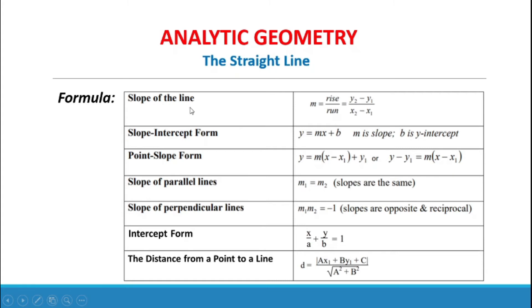Summary for the straight line. Slope of the line: M equals rise over run, or (Y₂ minus Y₁) over (X₂ minus X₁). Slope-intercept form: Y equals MX plus B, where M is the slope and B is the y-intercept. Point-slope form: Y minus Y₁ equals M times (X minus X₁).